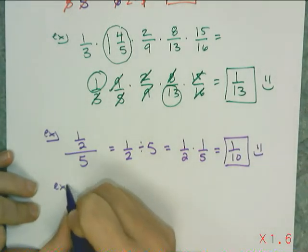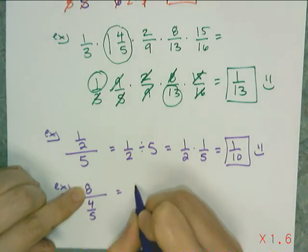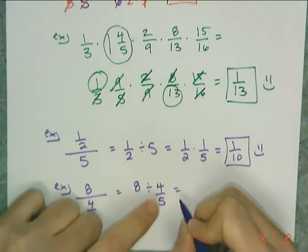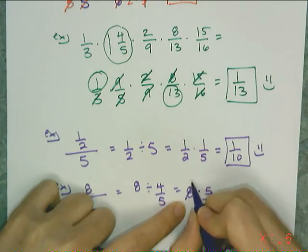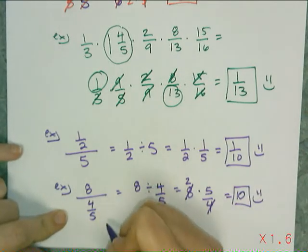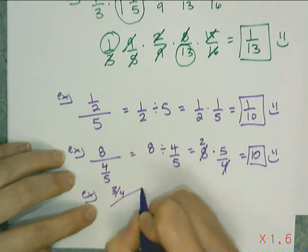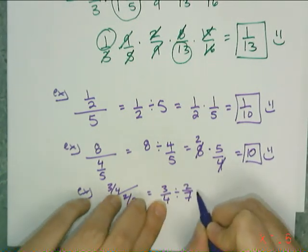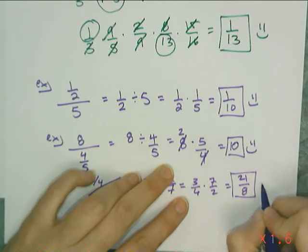I just have to think about which is the numerator and which is the denominator. If I have 8 divided by 4 fifths, the numerator is 8 and the denominator is 4 fifths. I rewrite it directly without flipping yet — I don't flip until it's in division form. Then I have 8 times 5 fourths, and I can use my canceling trick: 8 and 4 cancel to make 2, giving me 10 as my answer. And if I have a fraction in both numerator and denominator — like 3 fourths over 2 sevenths — that's 3 fourths divided by 2 sevenths, which is 3 fourths times 7 halves. Nothing cancels, so I multiply straight up and get 21 over 8.